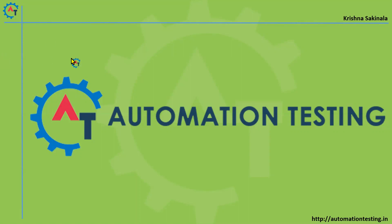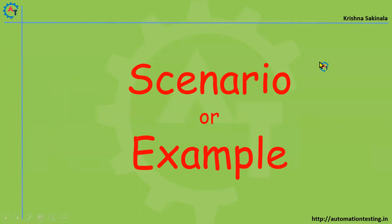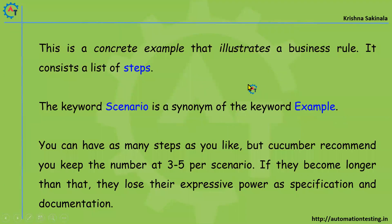Welcome to automation testing. In this video we will see scenario and example in Cucumber. Scenario and example both can be used for the same purpose. A scenario is a concrete example that illustrates a business rule — it consists of a list of steps. The keyword 'scenario' is a synonym of the keyword 'example', so you can use either. Most of the time, 99% of people use only 'scenario', but both are valid.